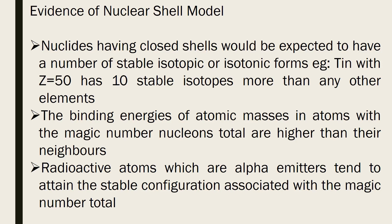The binding energies of nuclei with magic number nucleons are higher than their neighbors. As seen with oxygen (magic number 8) and helium (magic number 2), their binding energies are quite higher compared to neighboring elements. Also, when a radioactive element disintegrates by alpha emission, it tends to attain a stable configuration associated with a magic number.